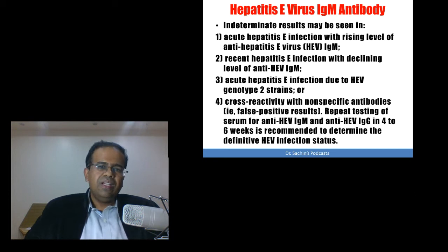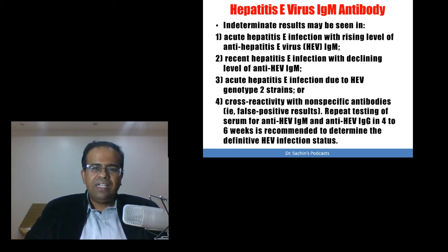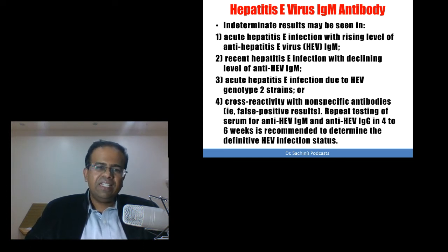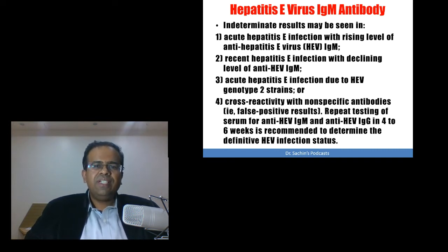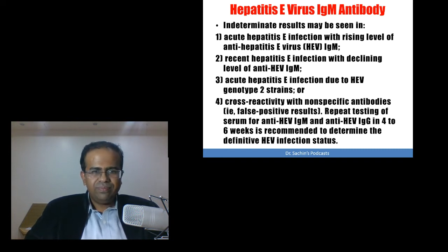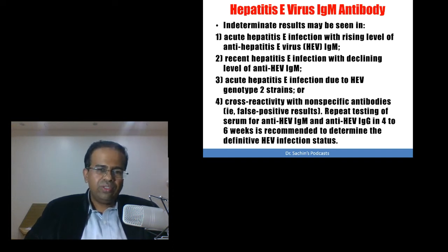Also, recent Hepatitis E infection with a declining level of anti-HEV IgM antibody can also cause an indeterminate result. The third cause of an indeterminate result is acute Hepatitis E infection due to HEV genotype 2 strains. There are 4 strains — 1, 2, 3 and 4 — of which the second strain can cause indeterminate results.